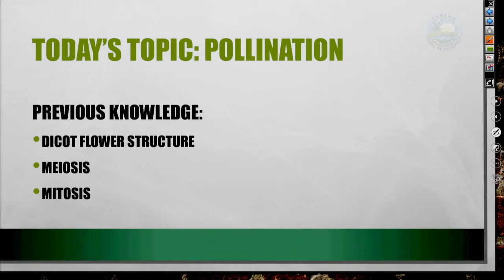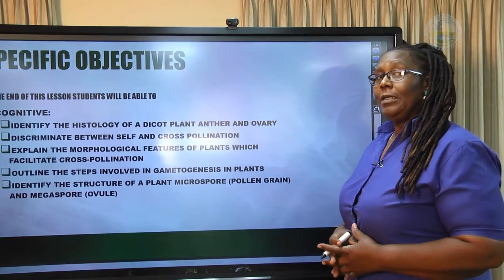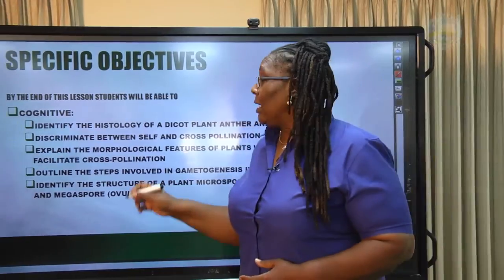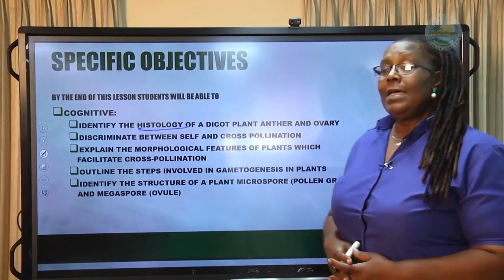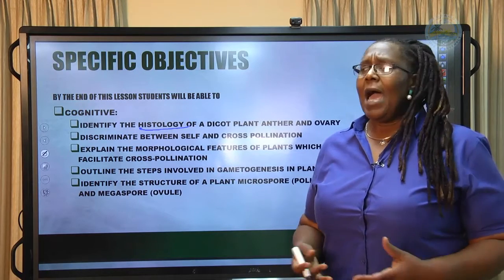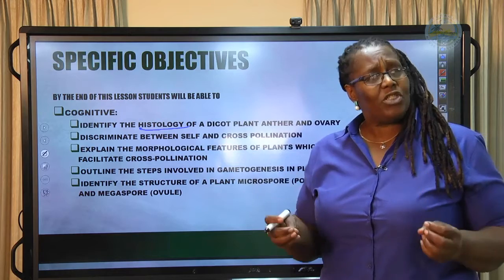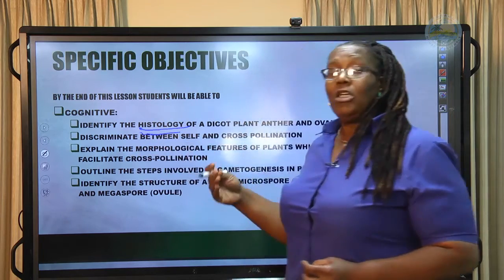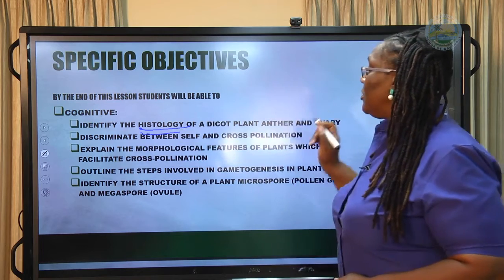In today's topic we are going to look at pollination. You would have done topics before that will put you in good stead, including the dicot flower structure and meiosis and mitosis. We would like to be able to identify the histology of dicot plants — the anther and ovary. Histology is the study of tissues, which you covered in Module 1 when looking at the structure of stems and leaves.